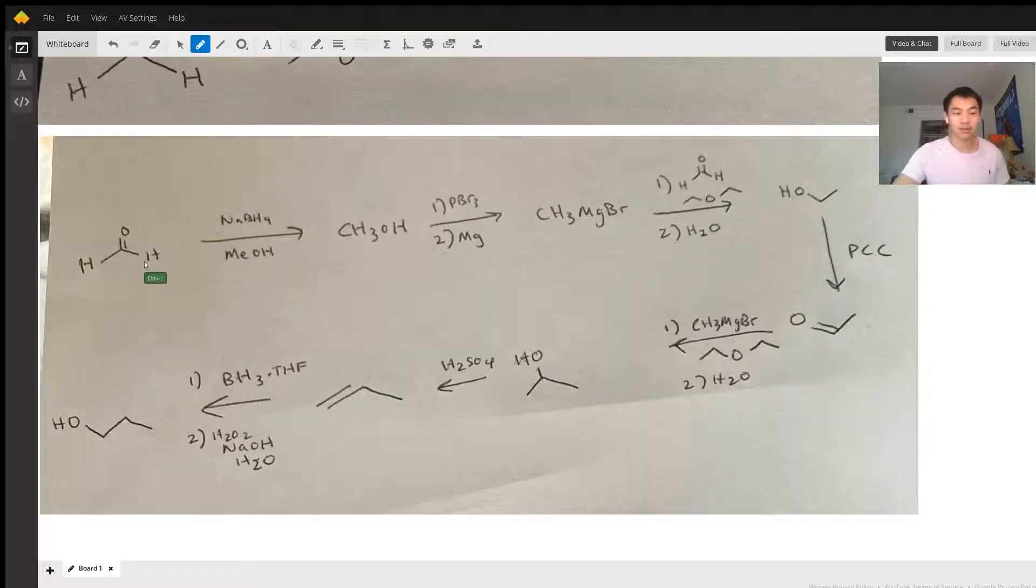I turned this formaldehyde into a Grignard reagent by first reducing it to methanol using NaBH4. Then PBR3 changes the OH into a bromine. You add Mg to make CH3MgBr—this is your Grignard reagent.